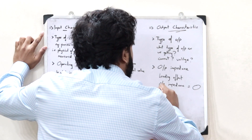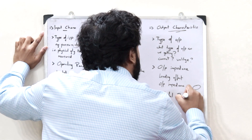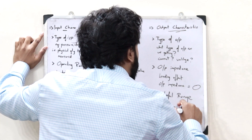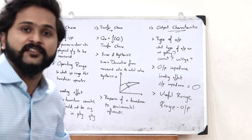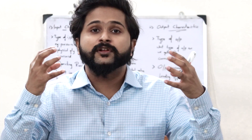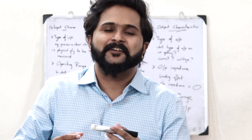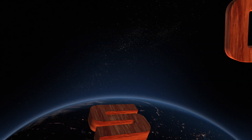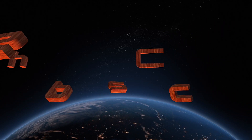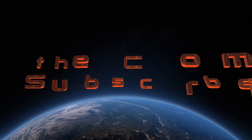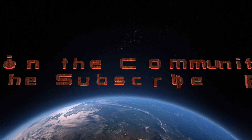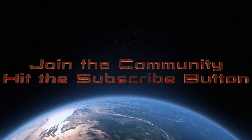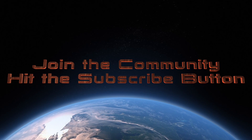Finally, we have the useful range — that is, the range of output values that can be given with the help of a particular transducer. These are the three main characteristics — input, transfer, and output — that we have to keep in mind during the selection of a transducer. I hope you now have a clear understanding of how to select a transducer. If you found this video informative, hit the like button and subscribe. We'll be discussing further topics in upcoming videos — stay tuned, and I'll see you in the next video!